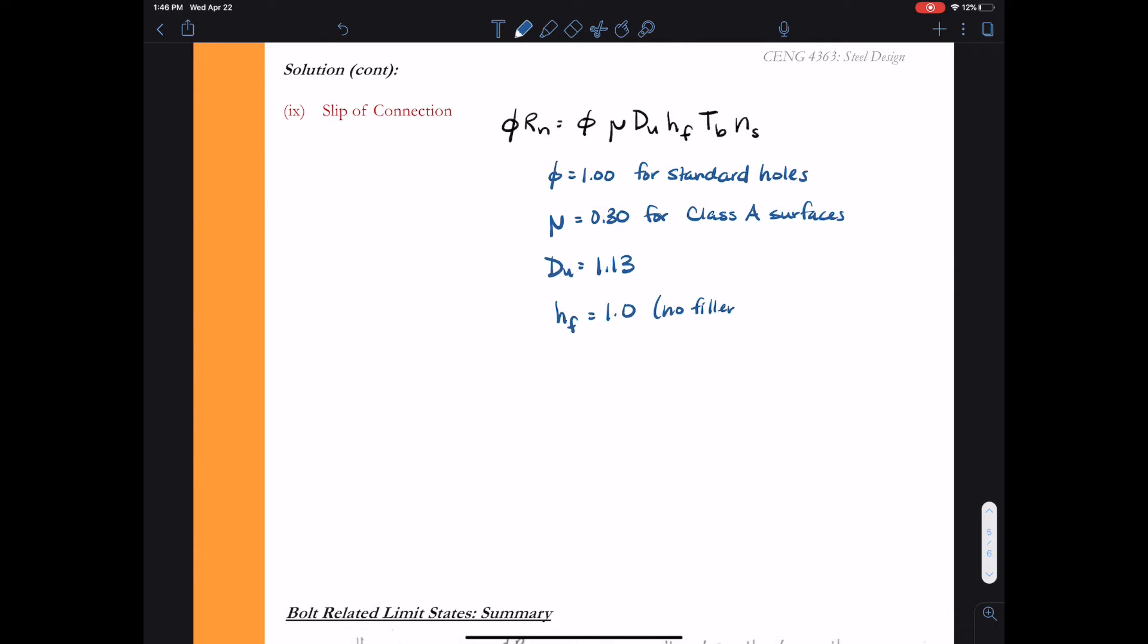Hf is going to be 1.0 because in this connection, the splice plate connection, we had no filler plates. Tb we get from AISC table J 3.1 and that says that Tb equals 39 kips. The minimum bolt pretension is 39 kips for a 7/8 inch diameter group A bolt.